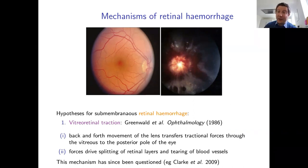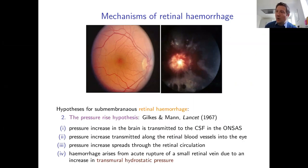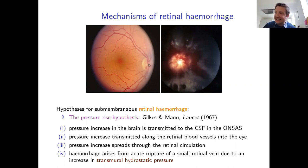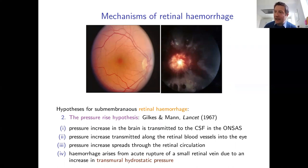Attention has now turned to an older mechanism postulated in 1967 by Gilkis and Man, known as the pressure rise hypothesis. In this model, a pressure increase in the brain is transmitted to the ONSAS — the optic nerve subarachnoid space — because they are connected. The pressure increase is then transmitted to the retinal blood vessels, propagating into the eye and spreading through the retinal circulation, entering at the optic disc and spreading out through the network.